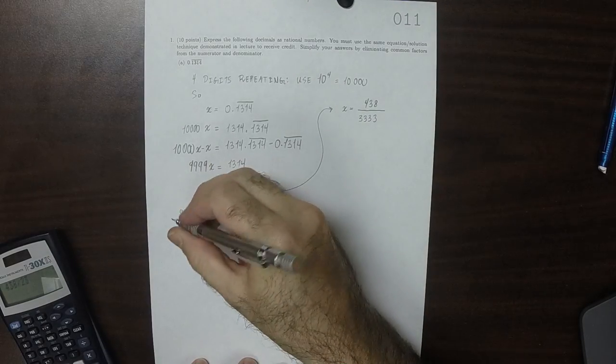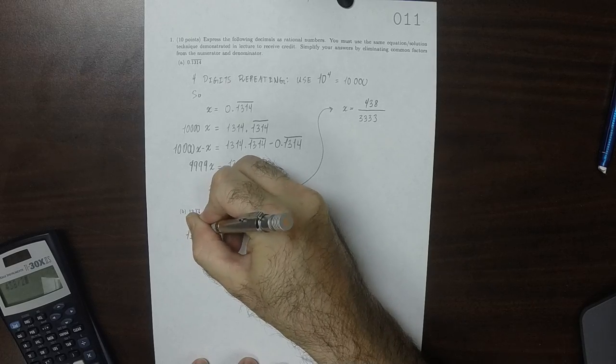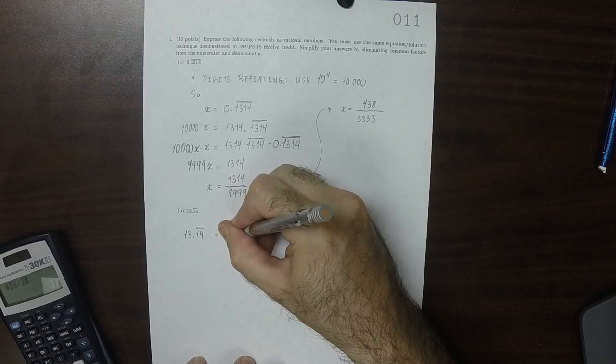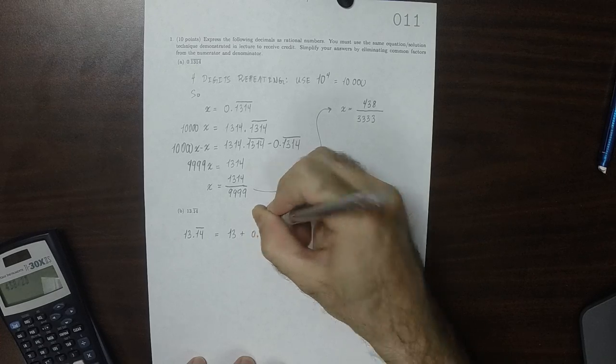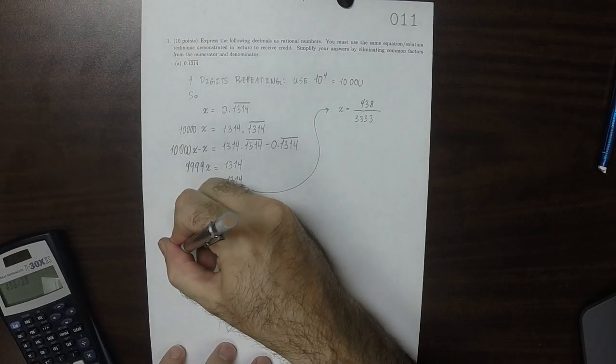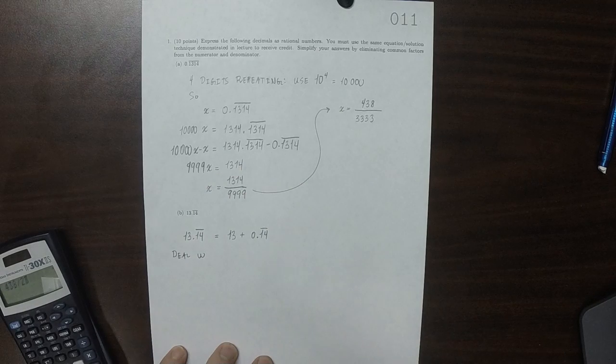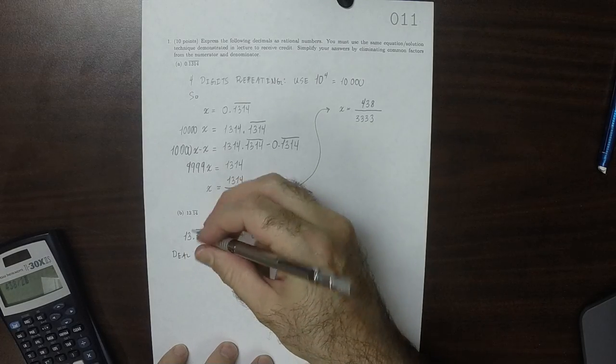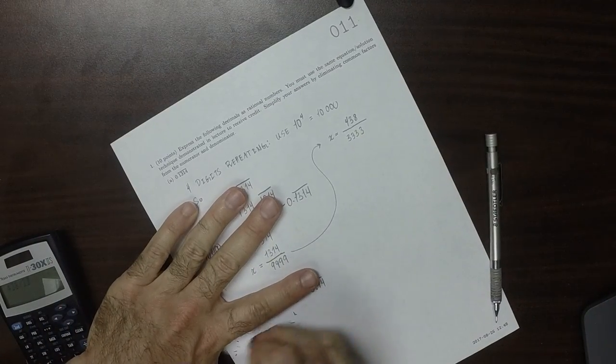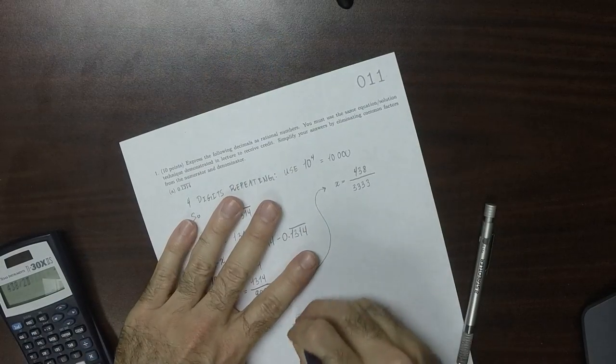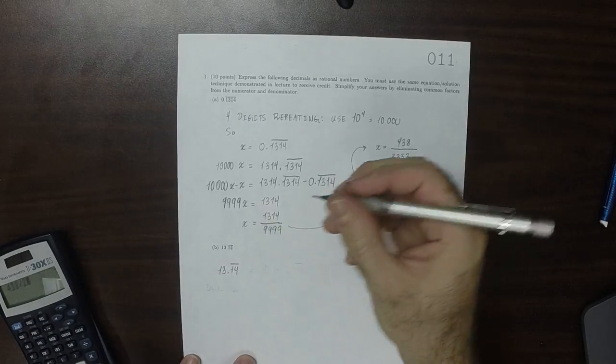So now this number, 13.14 with the 14 repeating, that's equal to 13 plus 0.14 repeating. We don't even need to do it the hard way. I'm going to do it just like we did above. There are two digits repeating.